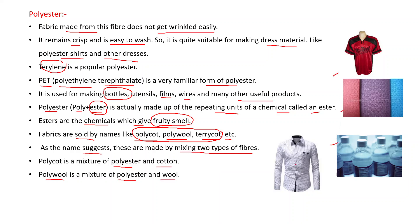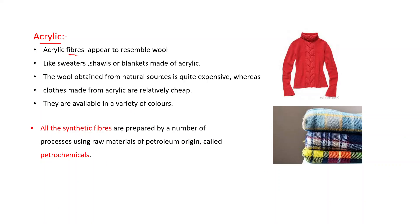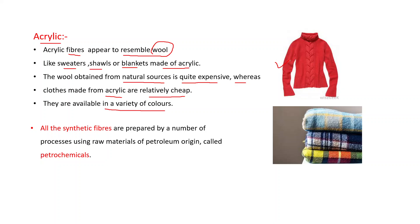The next synthetic fiber is acrylic. Acrylic fibers appear to resemble wool. Sweaters, shawls, or blankets can be made of acrylic. The wool obtained from natural sources is quite expensive, whereas clothes made from acrylic are relatively cheap and available in a variety of colors. What may look like woolen blankets may actually be made of a synthetic fiber like acrylic.